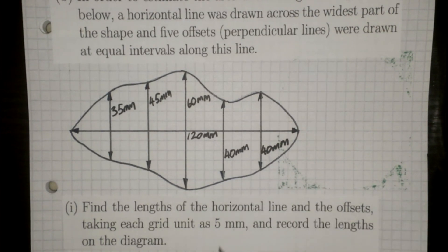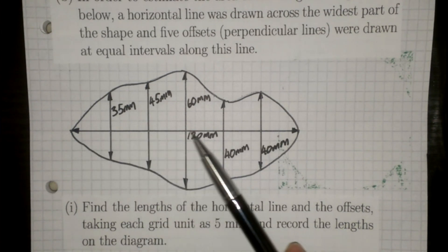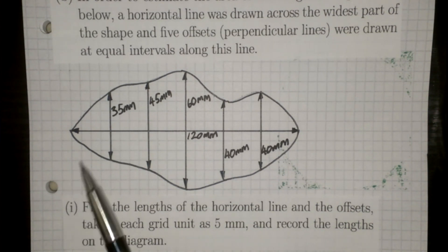With the vertical lengths you could just measure them and get pretty much the right answer — it's unlikely the printing error would take you too far off. But with the horizontal line at 120mm, that's probably long enough that you might get 115 or 125mm instead, so you're better off counting the boxes and multiplying by 5mm.